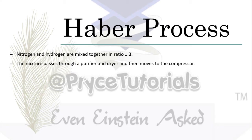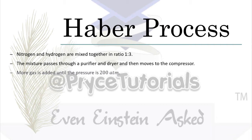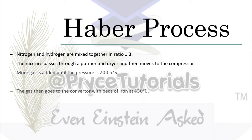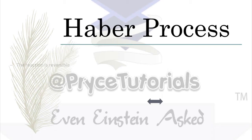The gas is dried as much as possible, then it moves on to the compressor where pressure is built up to around 200 to 300 atmospheres. The gas then moves on into the converter, where iron in sheets or beds is used as a catalyst to catalyze the reaction between nitrogen and hydrogen.